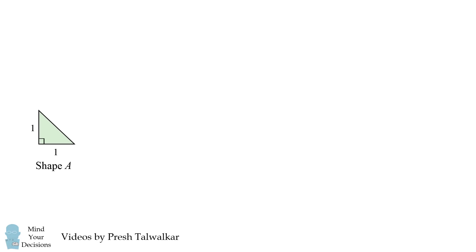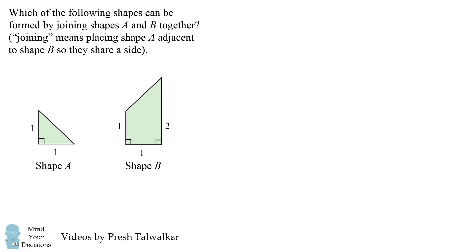Hey, this is Presh Talwalkar. We have shapes A and B. Which of the following shapes can be formed by joining shapes A and B together? Joining means placing shape A adjacent to shape B, so they share a side.